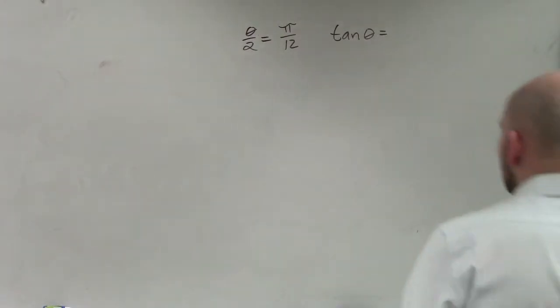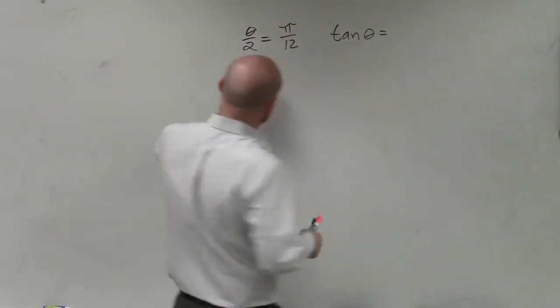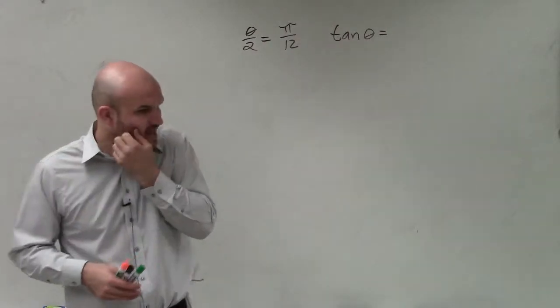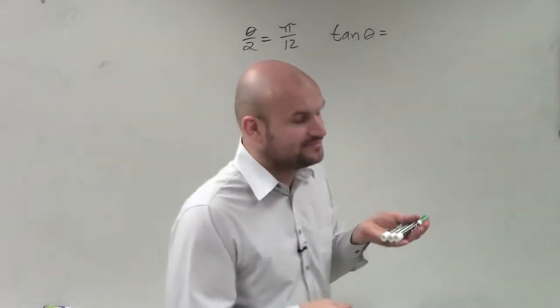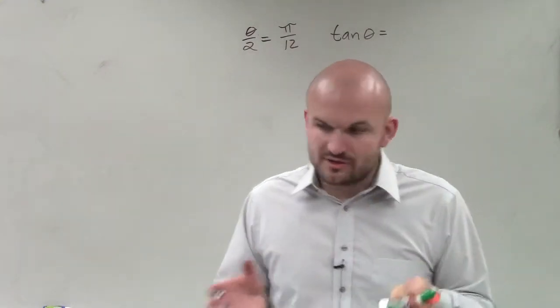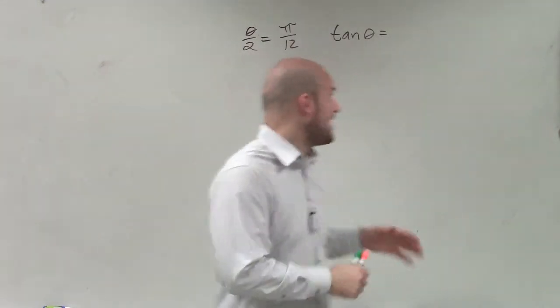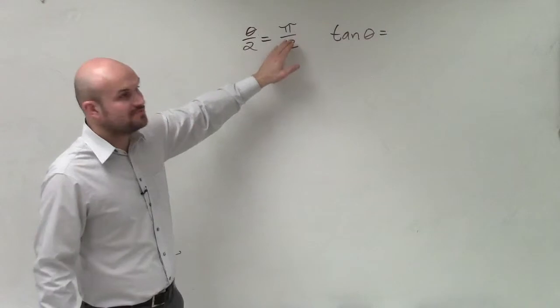So now what we're looking at is if I have an angle, and this angle is represented as θ over 2. This is represented as a half angle. So if I have a half angle which is π over 12, and I want to be able to evaluate for the valuation of that angle.